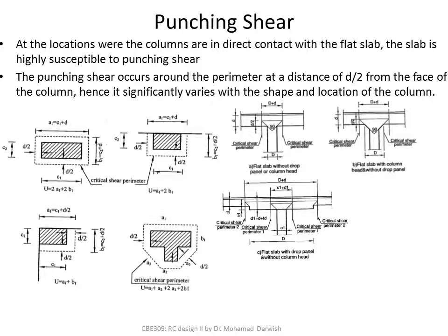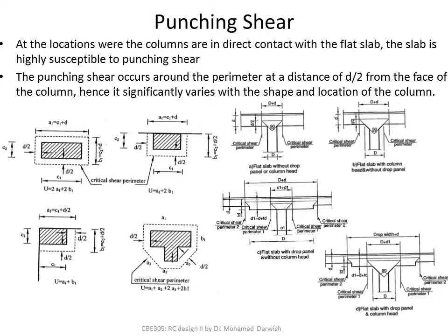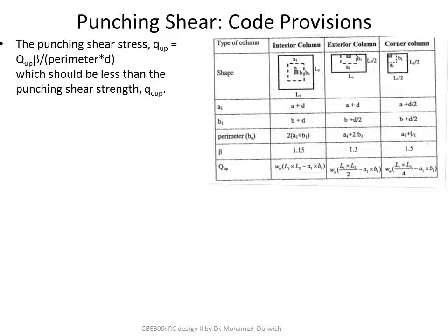The code provisions tell us how to check punching shear. You are mainly calculating two things: the punching shear stress and the punching shear strength.